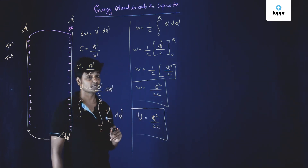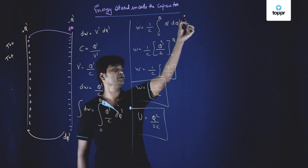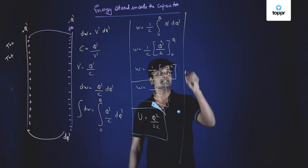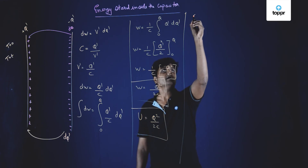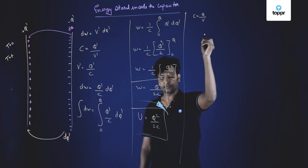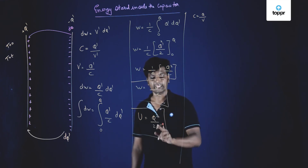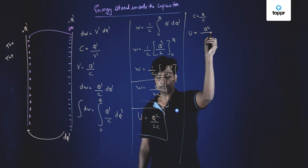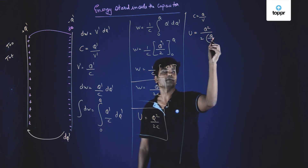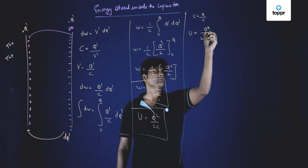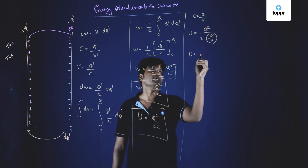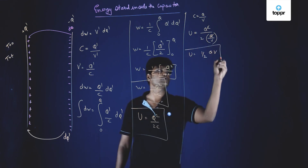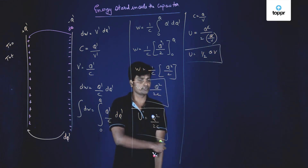This electric potential energy can be expressed in various forms. Since C = q/V, we can substitute and get U = q²/2C = q/(V), so one of the q cancels and U = (1/2) × q × V. This is another equation for electric potential energy.